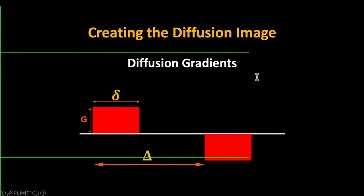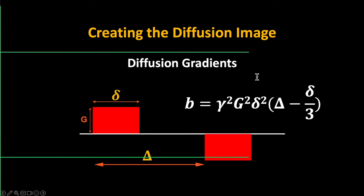With diffusion gradients, we have the overall magnitude of the diffusion gradient, the length of time (lowercase delta) that the gradient was turned on, and then uppercase delta representing how long it takes between this diffusion gradient and the re-phasing gradient — also called phasing and de-phasing. When you encounter a BVAL file, the B value is a mathematical term determined by: the gyromagnetic ratio (a constant), G (the strength of your magnetic gradient), delta (how long it was turned on), and the time between de-phasing and re-phasing gradients.